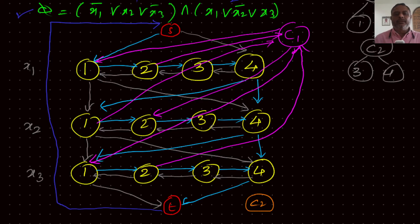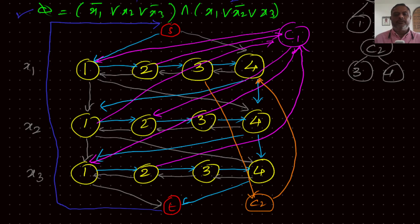Now looking at C2, which corresponds to nodes 3 and 4. For X1 it is X1 (positive), meaning left to right, so from 3 it goes to C2, then from C2 it goes to 4. The second literal is X2-bar, meaning right to left, so from 4 it comes to C2 and from C2 it goes to 3 of X2. Finally for X3, it is X3 (positive), so left to right — it comes from 3 and goes to 4.